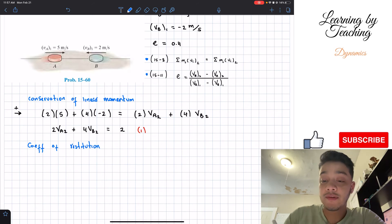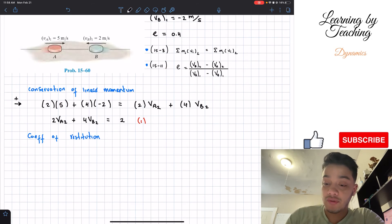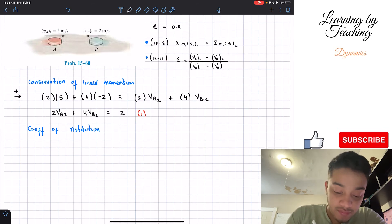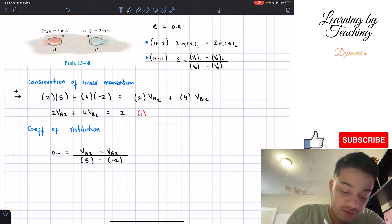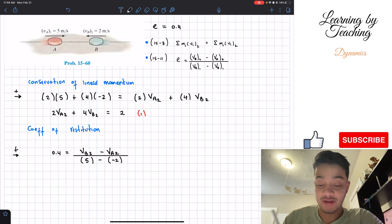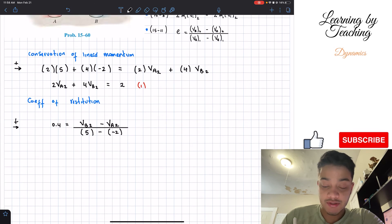Which is this one, 15-11. So we're going to go ahead and utilize this equation. We know the value of E, which is equal to 0.4. So we've got 0.4 is equal to the velocity of B at its second state minus the velocity of A at its second state, divided by the velocity of A initial. And that one we know, which is equal to 5 meters per second, minus the velocity of B at its initial, which is negative 2, since it's going to the left. So for this one as well, going to the right is positive.